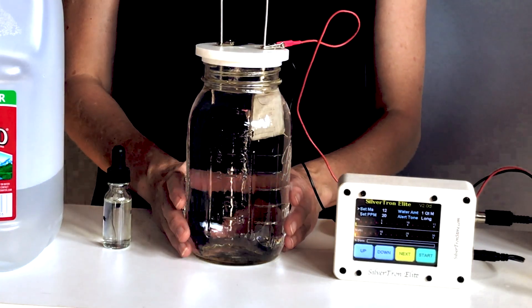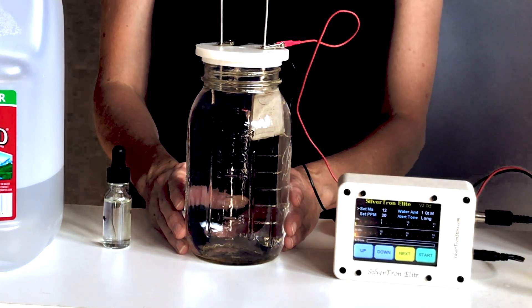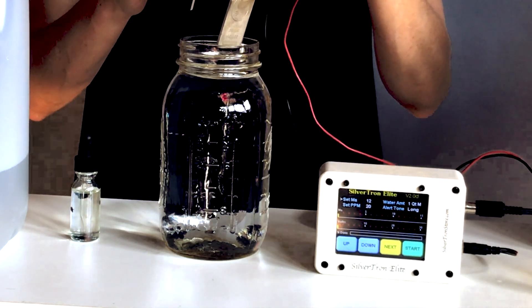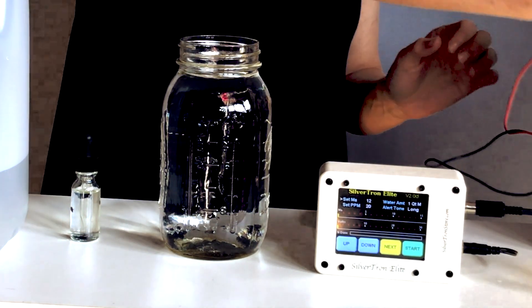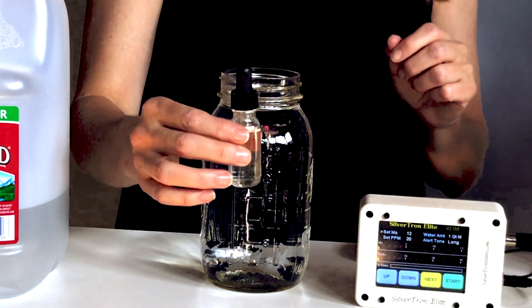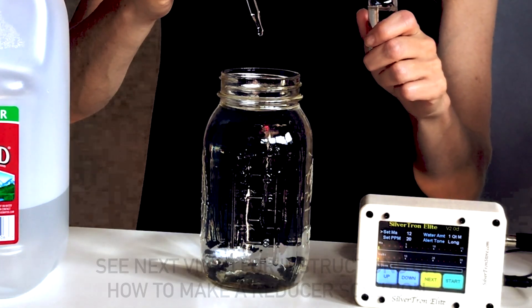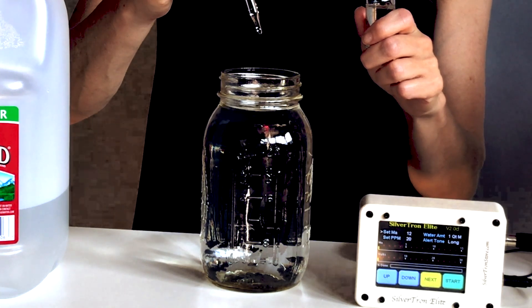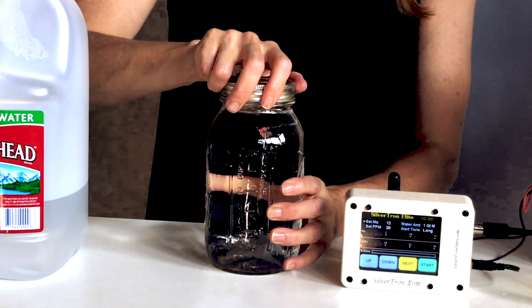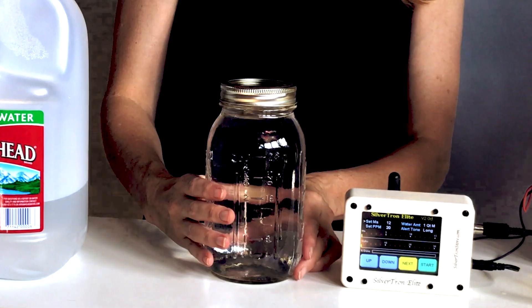When done, the batch should look clear and colorless like the distilled water that you started with. This is ionic silver at this point. If you wish to convert this ionic silver to colloidal silver, you're going to take off the cap, add five drops of your reducer solution, screw the cap on tightly, shake vigorously.